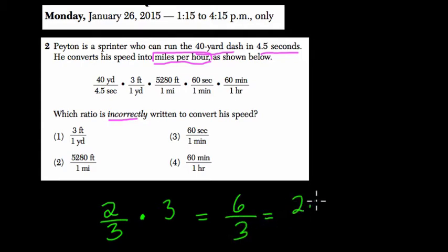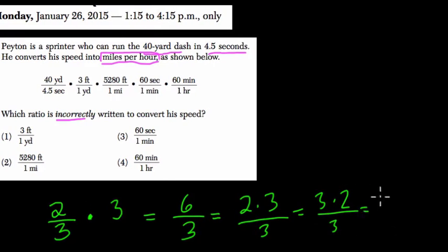Or we can think of this as 2 times 3 over 3, because we multiply these two numbers. Now, when you do this, you can think, oh, well, that's the same thing as 3 times 2 over 3, which is the same thing as 3/3 times 2. And 3/3 is just 1.